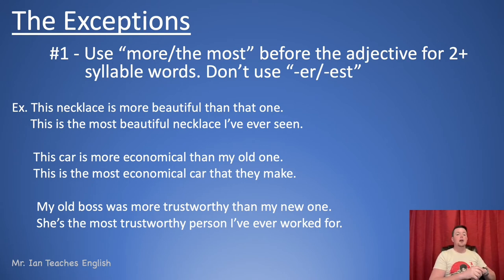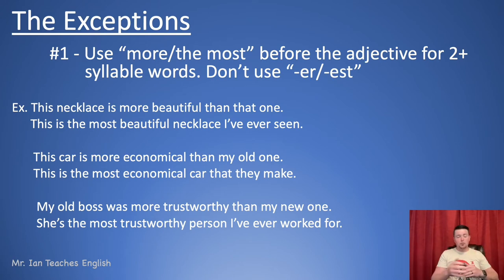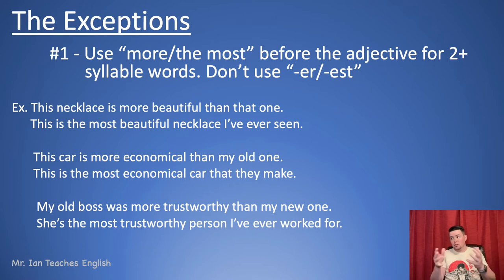Here are some examples. 'This necklace is more beautiful than that one.' Beautiful — three syllables — so we use 'more' in front of it. Superlative: 'This is the most beautiful necklace I've ever seen' — the most beautiful, again three syllables, so we use 'the most'. Next: 'This car is more economical than my old one,' and 'This is the most economical car that they make.' We're comparing two things with 'more,' and three or more with 'the most.'